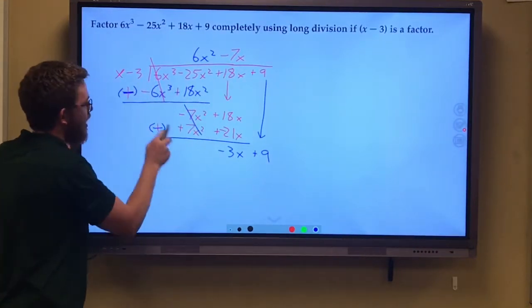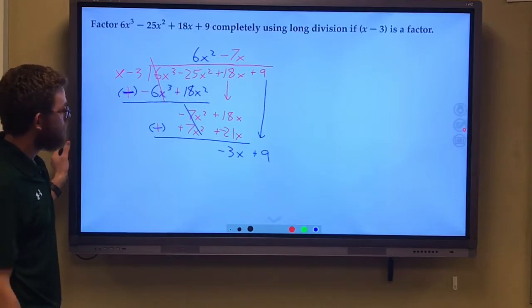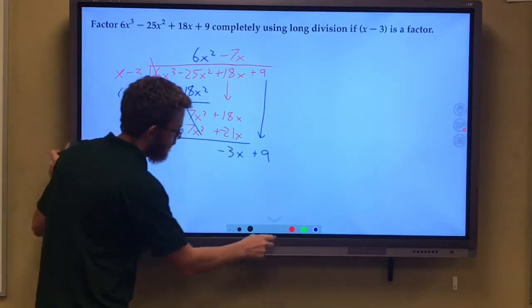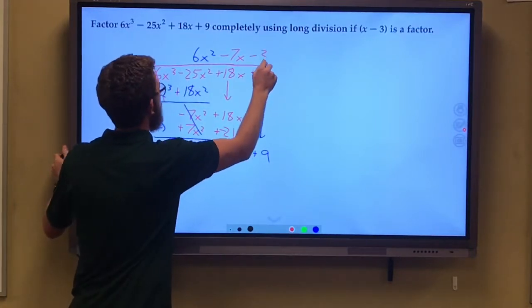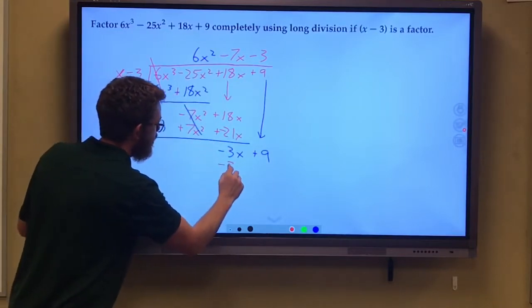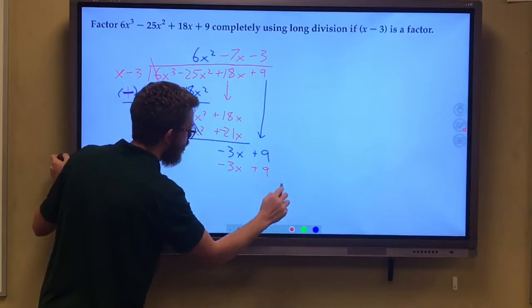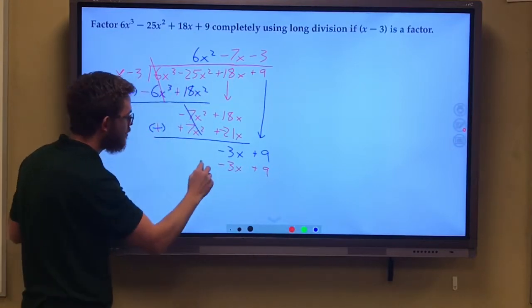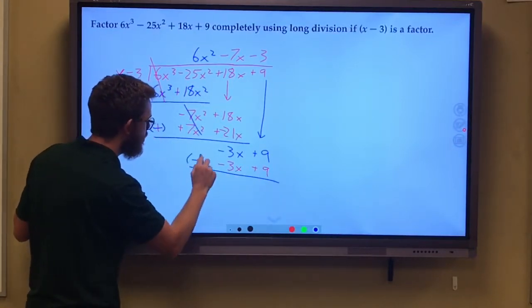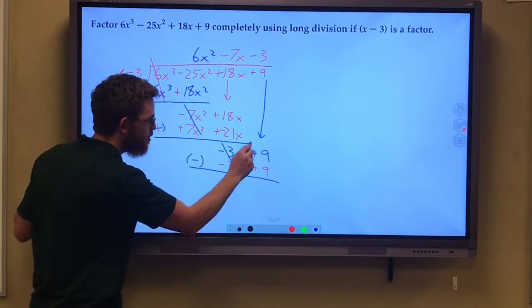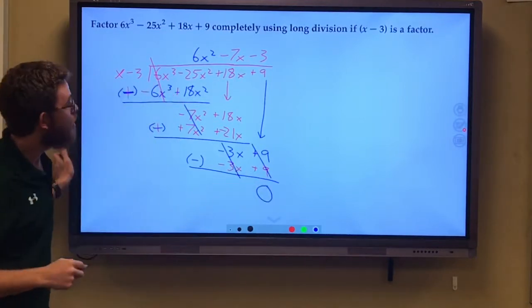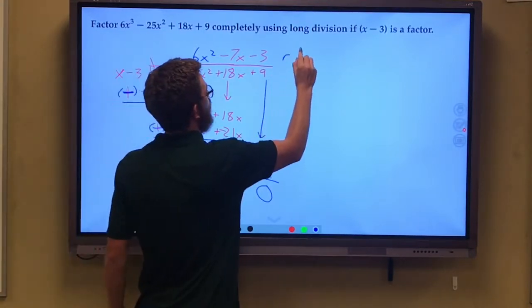What times x gives me negative 3x? Negative 3. Negative 3 times x is a negative 3x. Negative 3 times negative 3 is a positive 9. If these things are identical, when we subtract them, anything minus itself becomes 0. So we do have that remainder of 0.